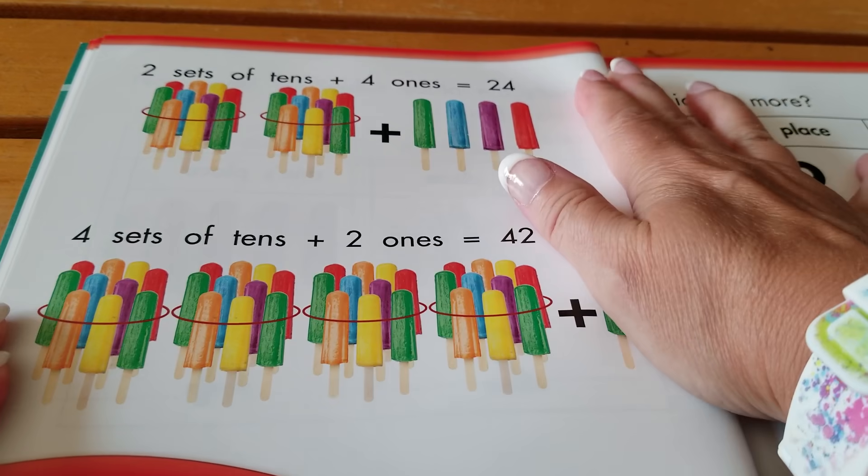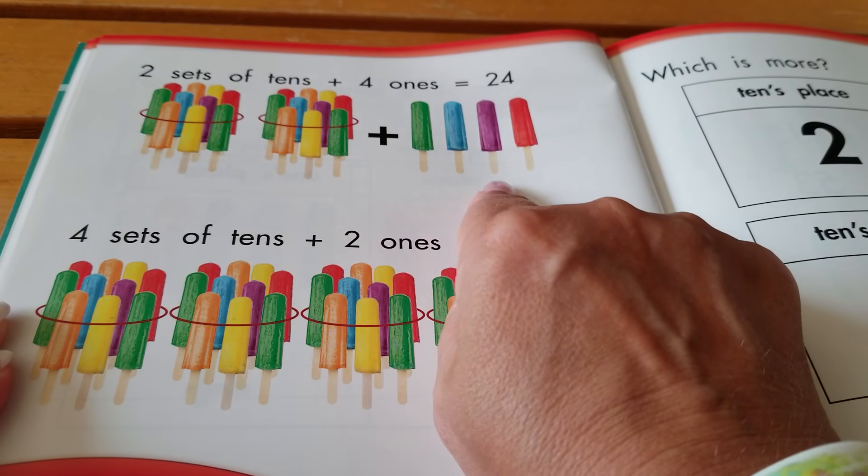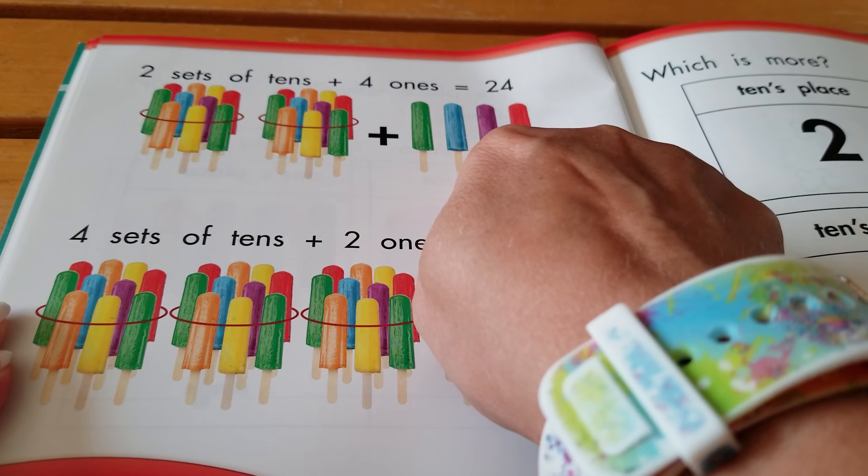Two sets of tens and four ones is ten, twenty, twenty-one, twenty-two, twenty-three, twenty-four. Twenty-four.